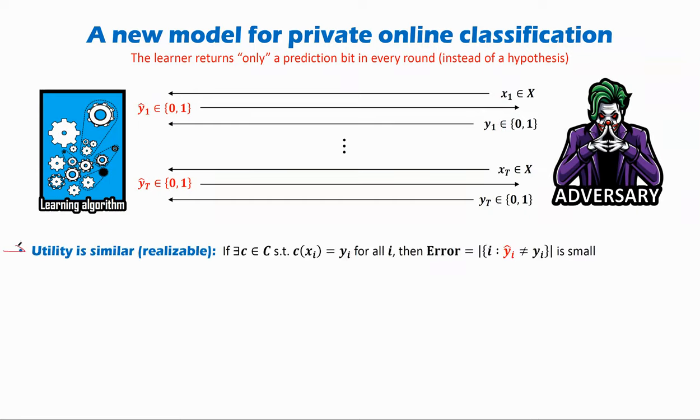This again goes on for T rounds, and the utility requirement stays roughly the same. Assuming that we are in the realizable setting, we want to guarantee that the number of mispredictions we make is small. So that basically stays the same. The privacy definition requires a little care.